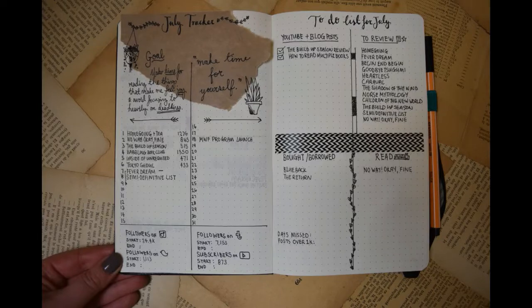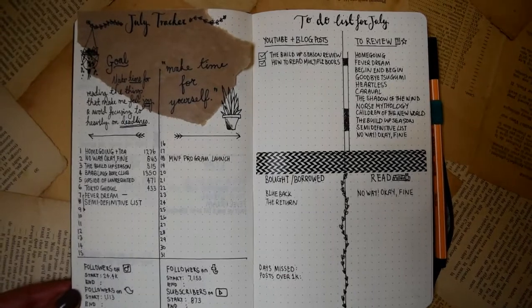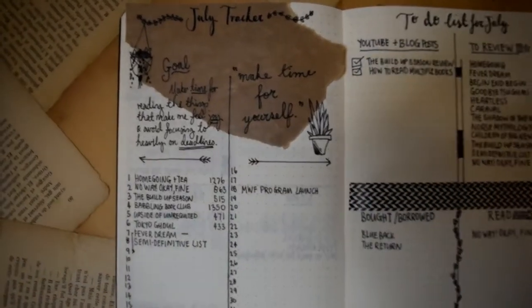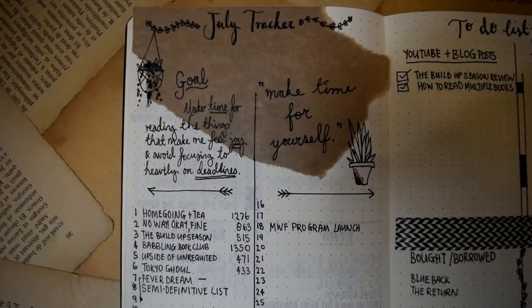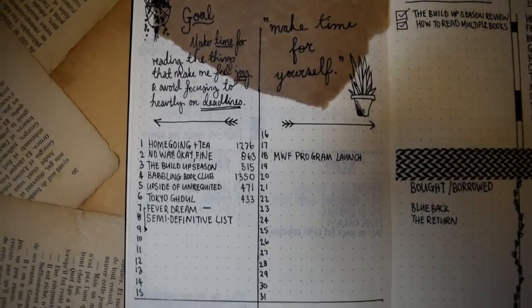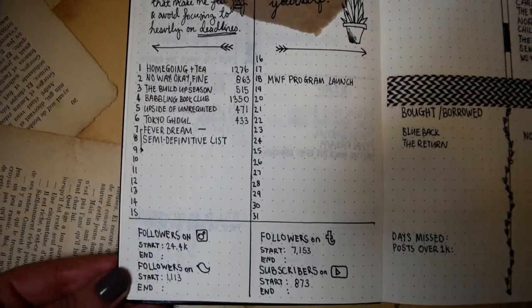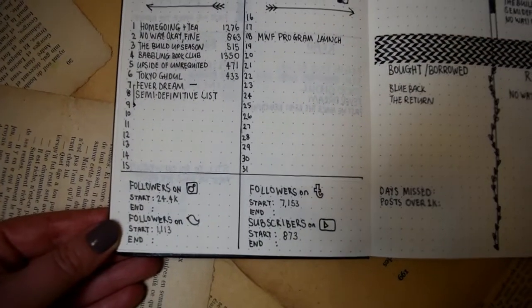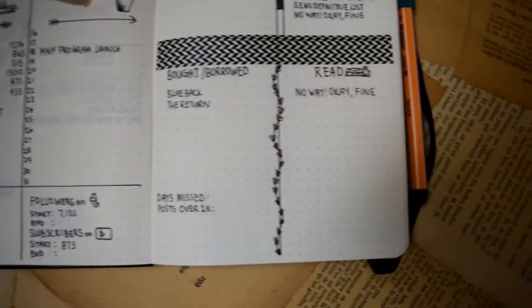And finally, here is my July tracker which is partially completed as we're a little bit into the month when I'm filming this. I'm gonna continue to fill it in throughout the month and I'm finding that it's actually working really well. I'm really happy with this layout and I think it improves on some of the little bits in May which weren't quite working for me.